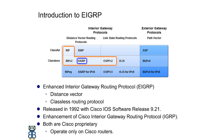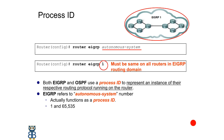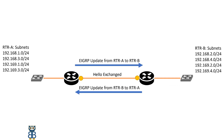EIGRP will form neighbor relationships with adjacent routers in the same autonomous system. EIGRP uses RTP, Reliable Transport Protocol, and its function is to deliver EIGRP packets between neighbors in a reliable and ordered way. All EIGRP routing information is exchanged between neighbors via multicast, using the address 224.0.0.10.